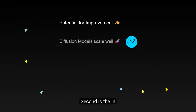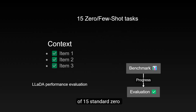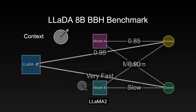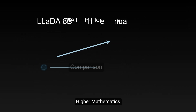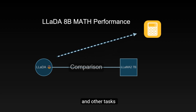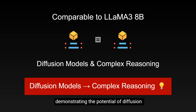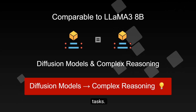Second is in-context learning capability. In evaluations of 15 standard zero-shot/few-shot learning tasks, the LIDA 8B model outperformed LLaMA 2-7B on tasks such as BBH (Big Bench Hard), Math (higher mathematics), and other tasks, and performed comparably to the latest LLaMA 3-8B model, demonstrating the potential of diffusion models in complex reasoning tasks.